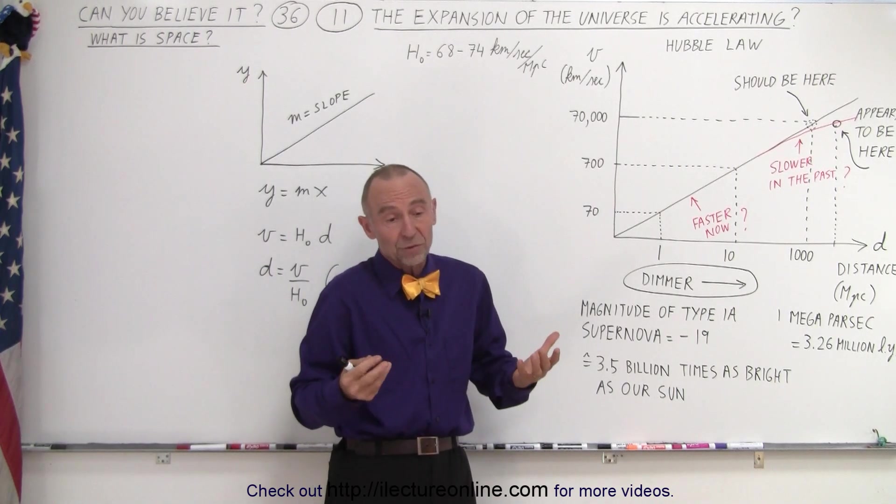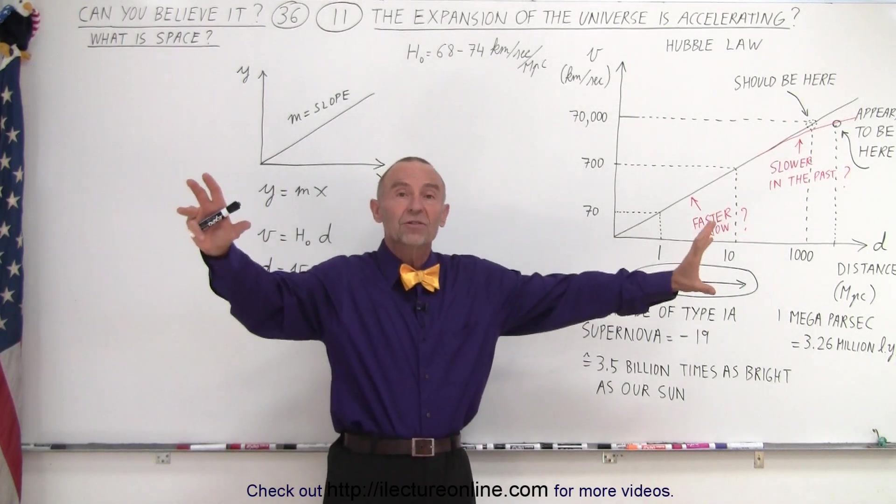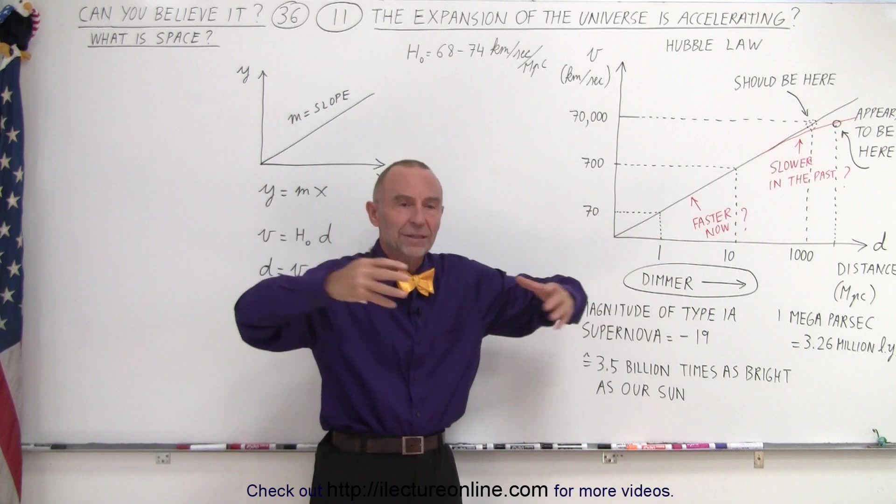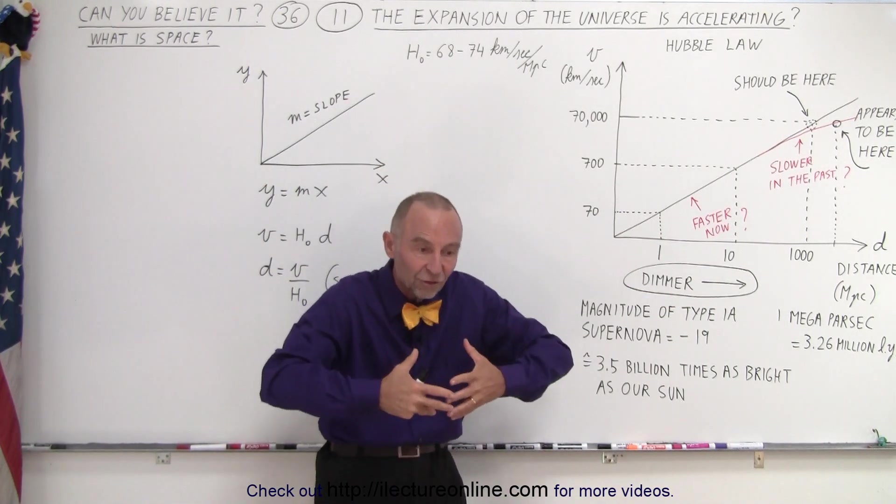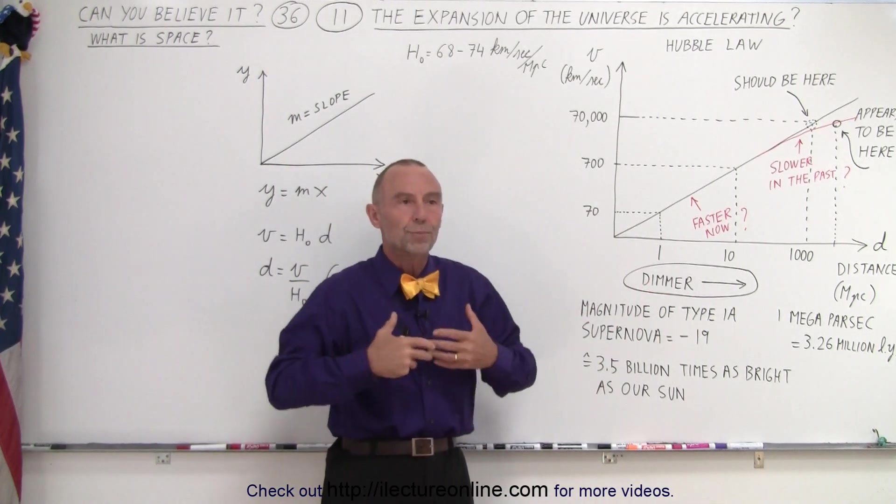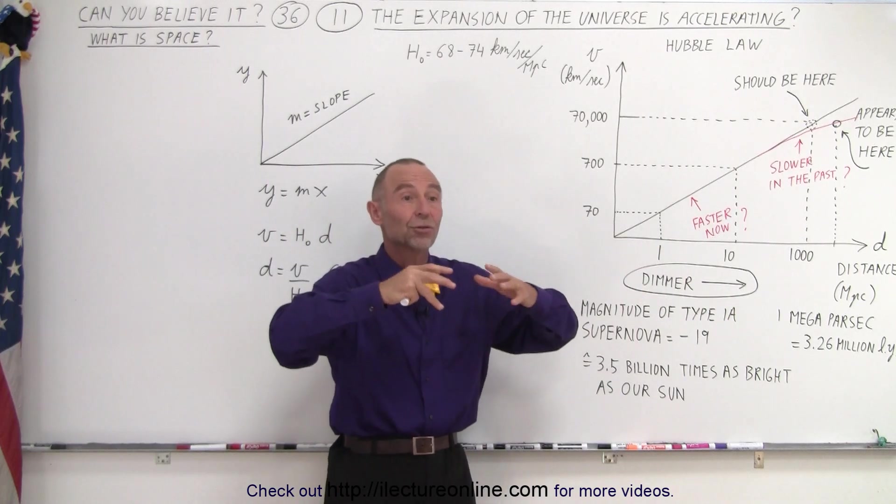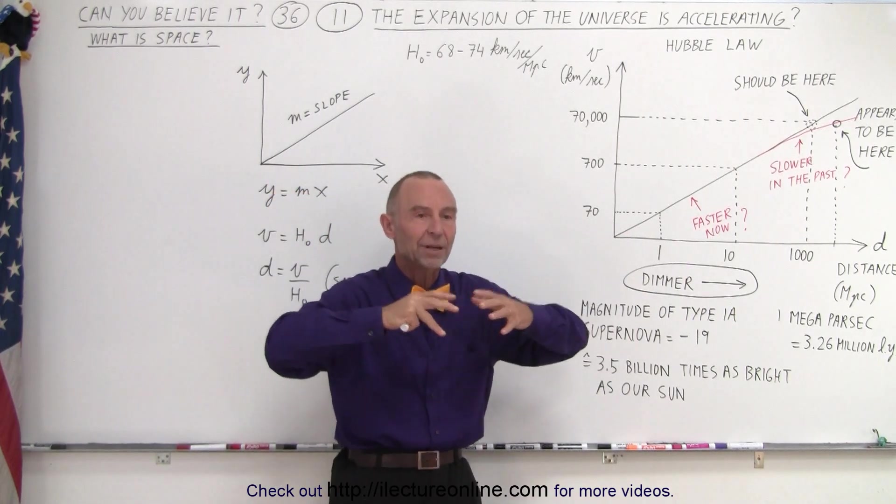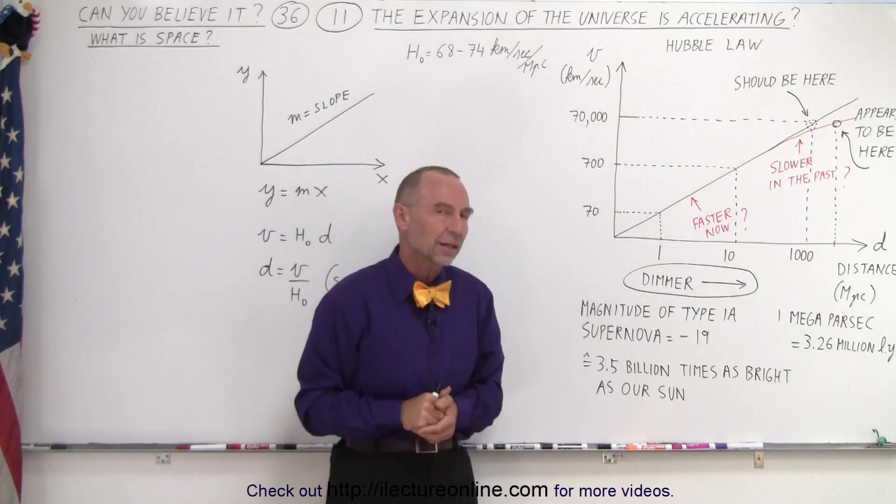Something must be causing the expansion of space itself to accelerate, and we don't know what. It's doing exactly the opposite of what we'd expect, since gravitational force should continue to slow it down. The idea is that there must be some sort of energy that pushes galaxies apart, that expands space. Maybe there's energy contained in space that's now producing forces stronger than gravitational attraction, overpowering the gravitational pull between galaxies.